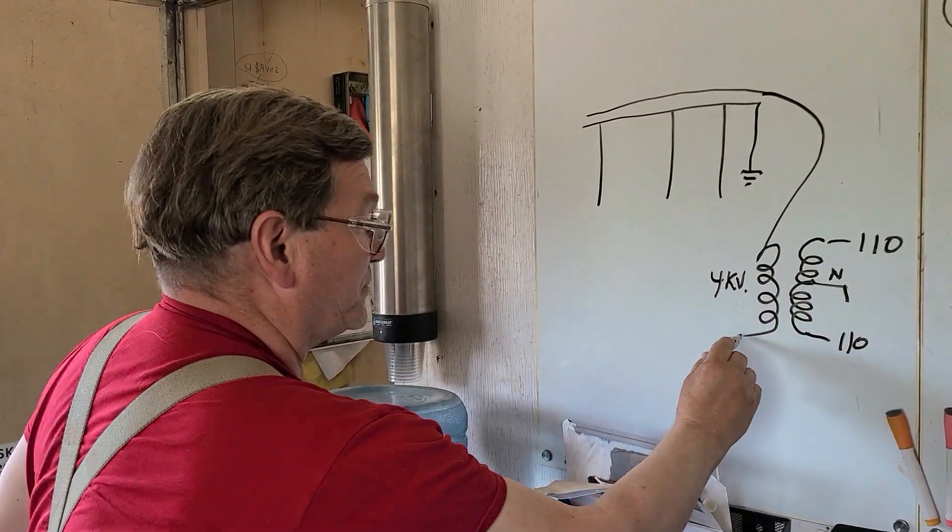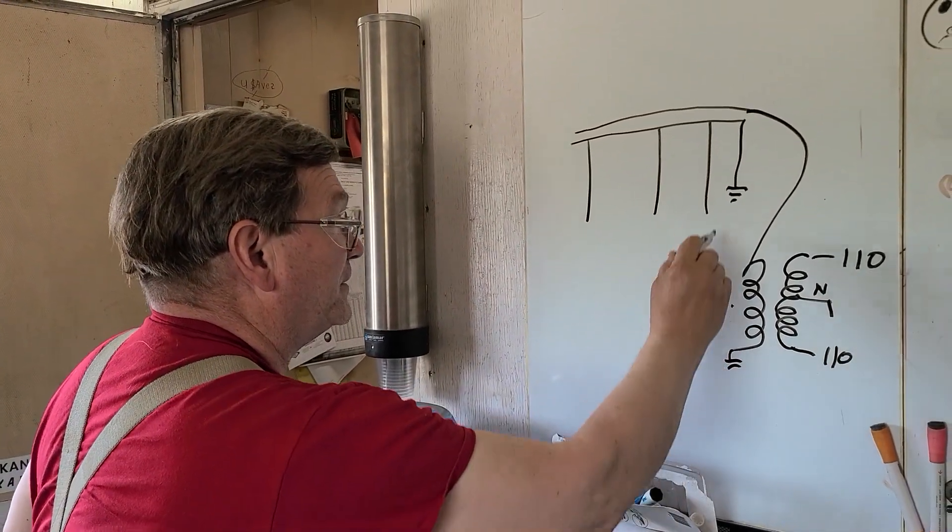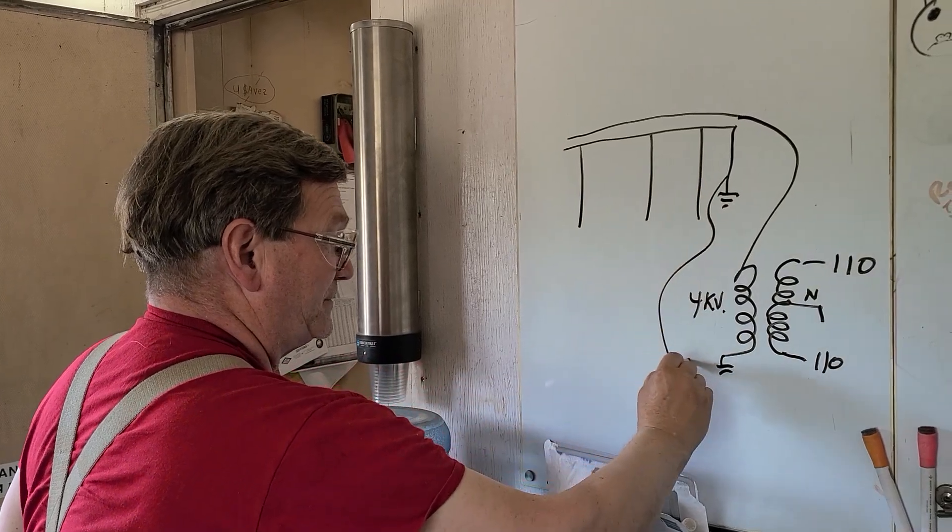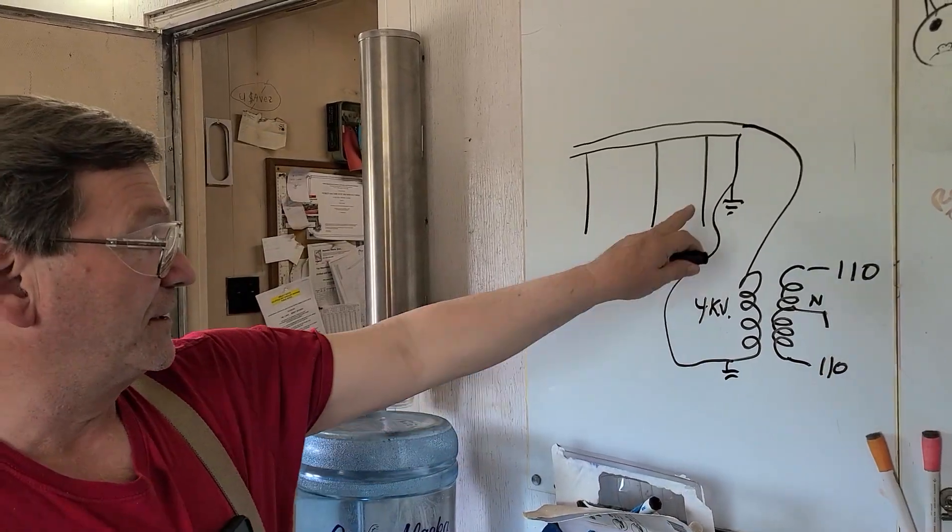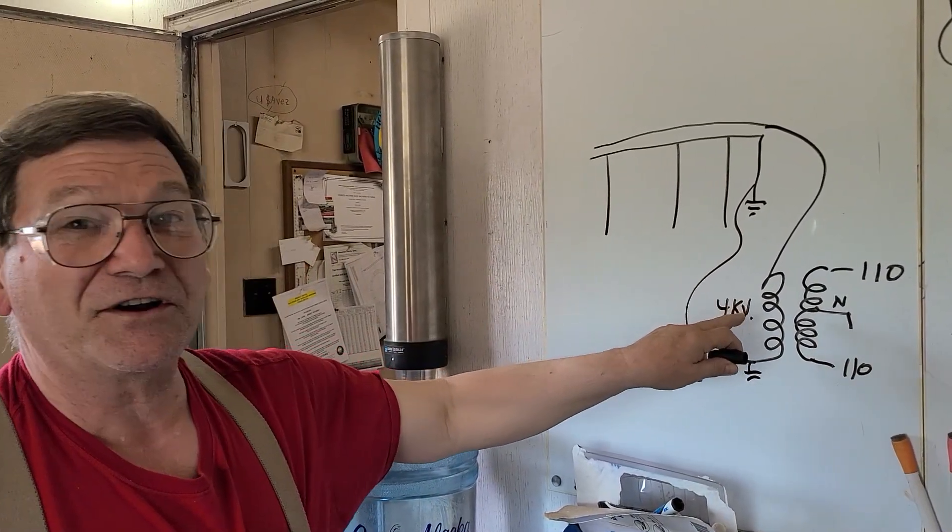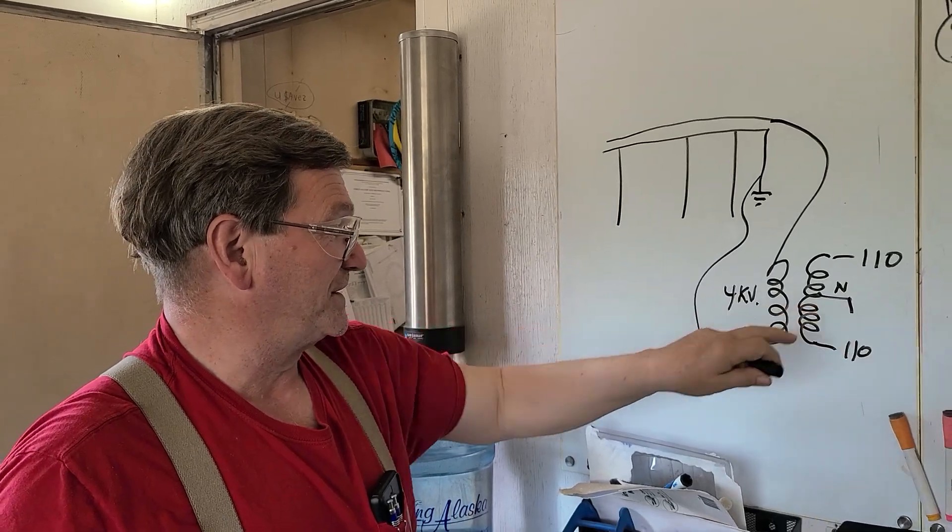And they'll have a transformer like this out on your pole. And of course, it's grounded here and connected actually to the other side so that you have a connection. And here is where the reason for grounding this comes in.